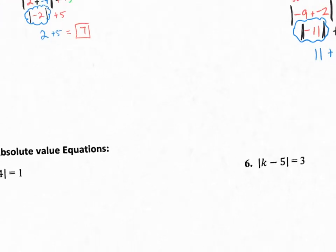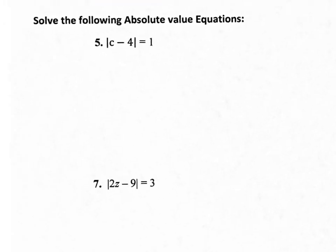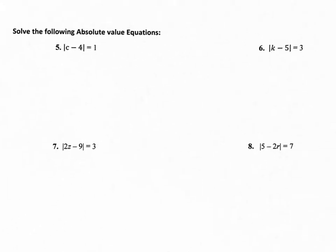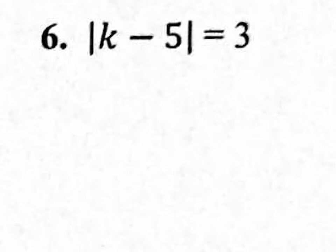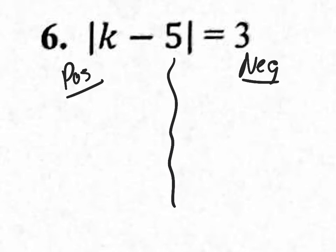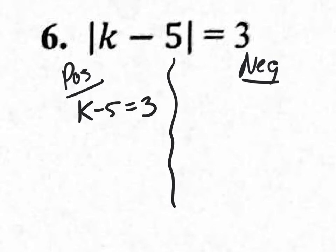We practiced with 2 and 4 — go back and practice with 1 and 3. Answers are posted on the wall or on Edmodo. Now, number 6: we're solving absolute value equations. To solve any absolute value equation, you need two situations — the positive situation and the negative situation. The positive situation is just the same equation with no absolute value lines: k minus 5 equals 3.